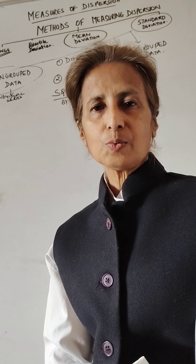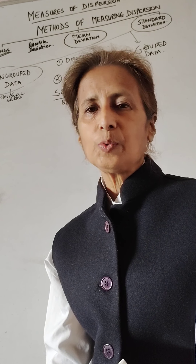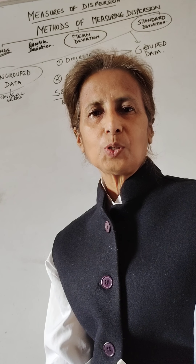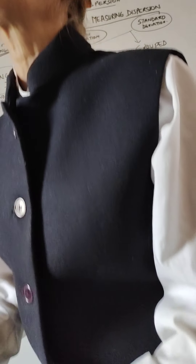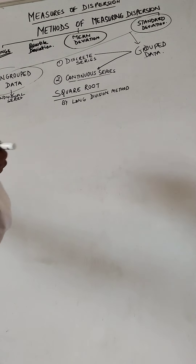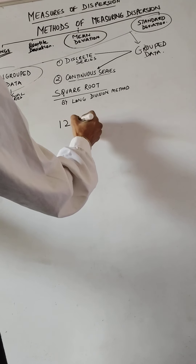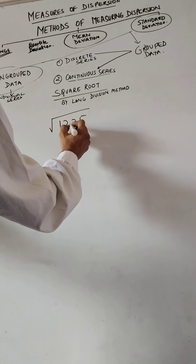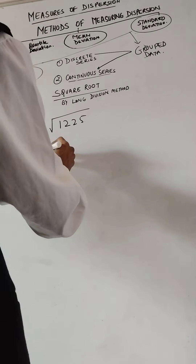Welcome to my class. We finished with the measures of dispersion — we did standard deviation. As the students have asked, in standard deviation we have to work out the square root. I'm going to take a class just to show you how to find the square root using long division. It's the easiest way to do it. Let's take this number: we have to find the square root of 1225, and I'm going to do it with long division.